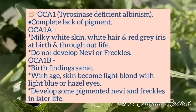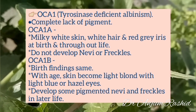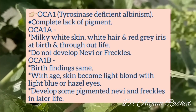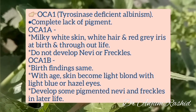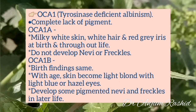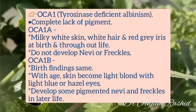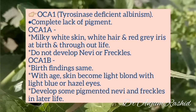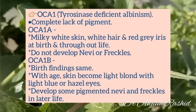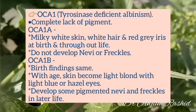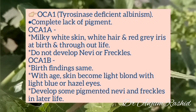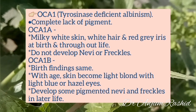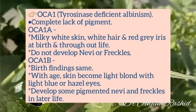These people do not develop nevi or freckles. In oculocutaneous albinism type 1b, the birth findings are the same, but with age the skin becomes light blonde with light blue or hazel eyes. They may develop some pigmented nevi and freckles in later life.